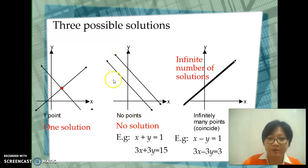The third type is when the graphs coincide, meaning one is on top of the other. In this case, there will be infinite number of solutions. This means every point on the line is a solution.